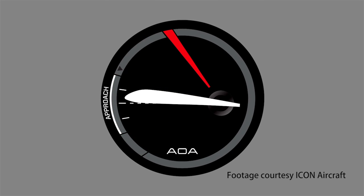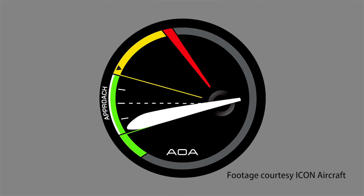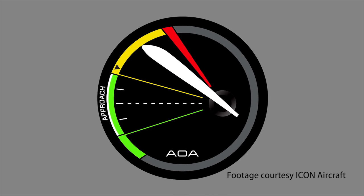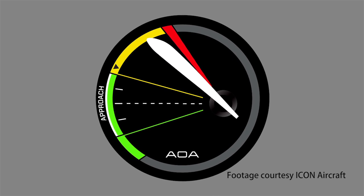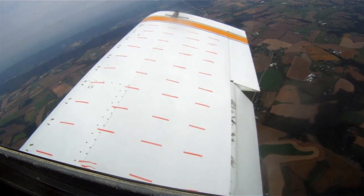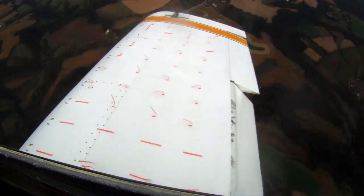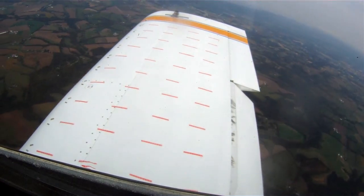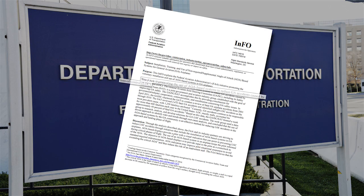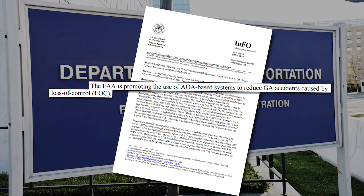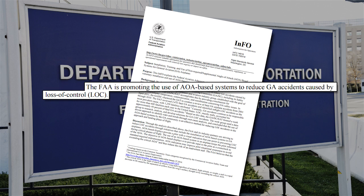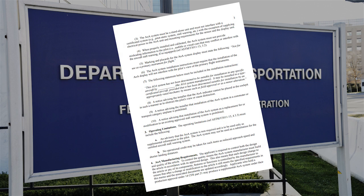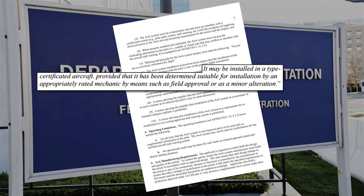Any AOA display currently available will graphically depict how the wing is performing aerodynamically, and specifically how close we're getting to asking the wings to do something they no longer can — namely, fly. No matter which type you choose, an AOA indicator is a proven safety device. The NTSB and FAA have recognized the need for AOA in light aircraft and have made some remarkable strides to make them easy to install.